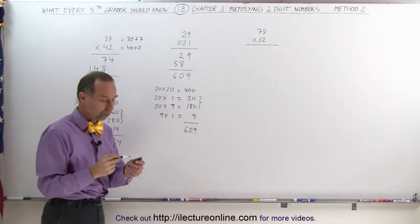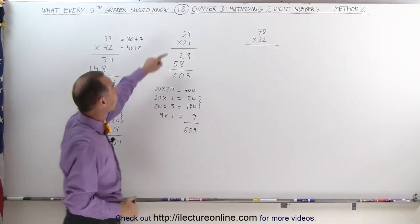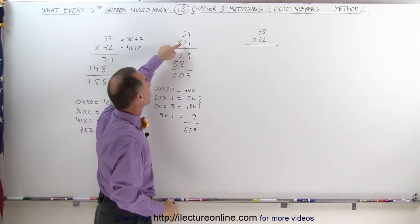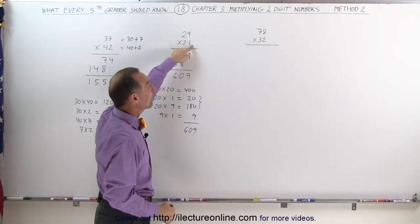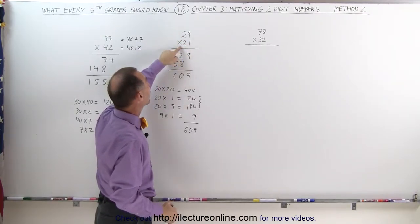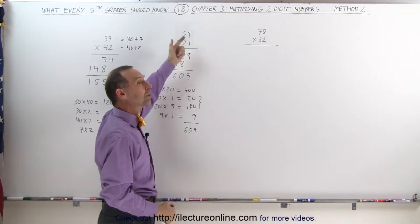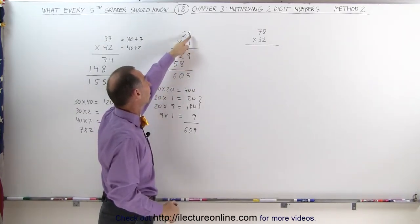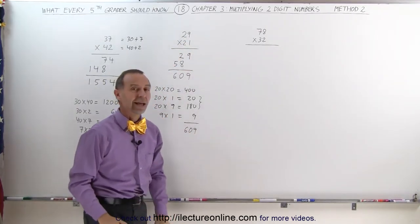Look how easy it is when you do it quickly like that. Again, 20 times 20 is 400, 20 times 1 is 20, that's 420. 20 times 9 is 180, 20 plus 180 is 200, add to 400 is 600, 1 times 9 is 9, 609.